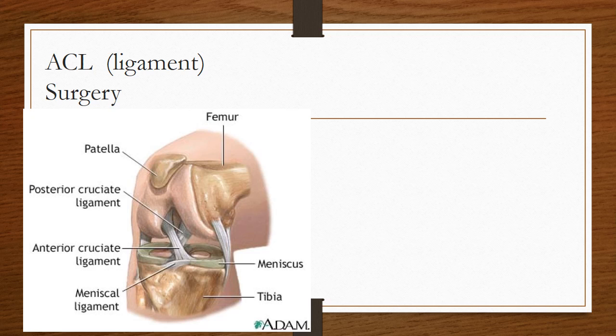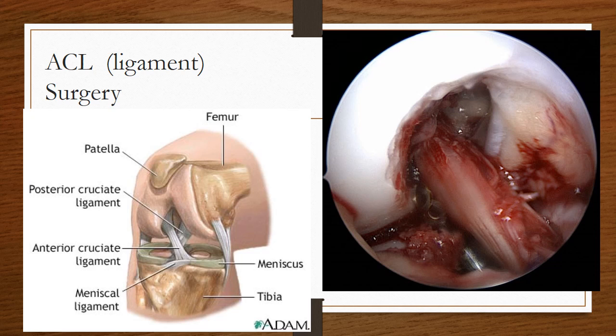Would you like to see an ACL surgery on a knee? Do you see that diagonal ligament right in the middle of the knee diagram and how it goes right into the end of the femur? See if you can spot the ACL ligament on the next photo — it's that diagonal ligament going right into the end of the femur. I know it's gross, but it's really cool. That's pretty amazing, right?